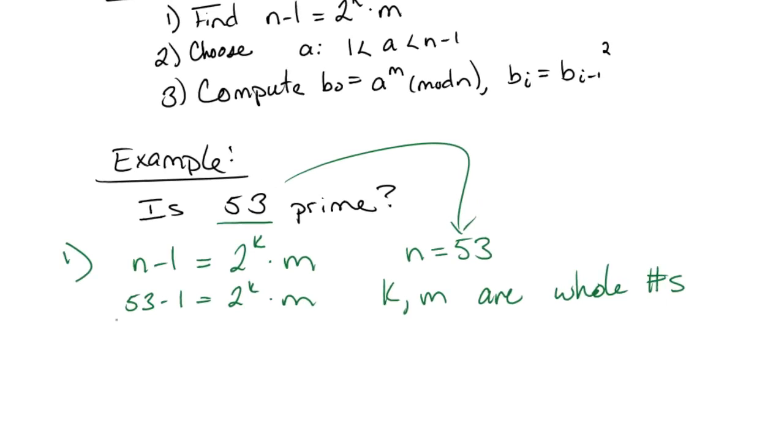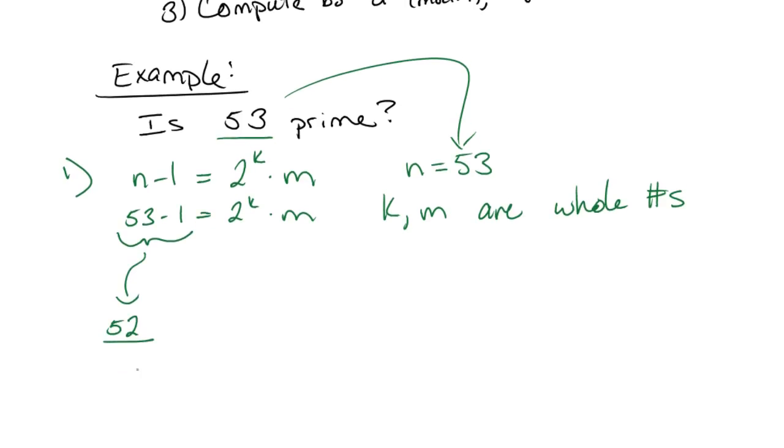Okay, so how we're going to do this, find k and m, is we're going to take this, which is 52, or 53 minus 1, and we're going to start by dividing it by 2 to the power of 1, which obviously is 26.